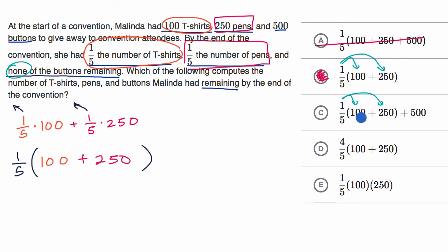Here, we have one-fifth times the number of T-shirts and pens, but then we just have the original buttons. And that is almost the opposite of what they're saying. They're saying we have no buttons remaining versus 500, so we could rule that out.